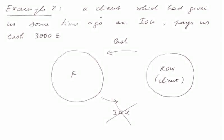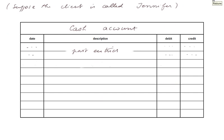Example number two. A client who had given us some time ago an IOU now pays us cash — 3,000 euros. The movements are this: cash comes into the firm and an IOU's value leaves the firm. You can give it back to the client or just throw it out — its value has disappeared. Suppose the client is called Jennifer, and Jennifer pays us on October the 15th. So in the cash account, on October the 15th, we make an entry: Jennifer pays — we record on debit, 3,000.